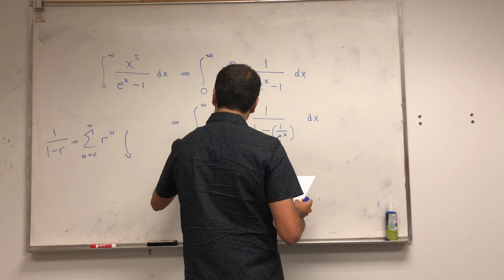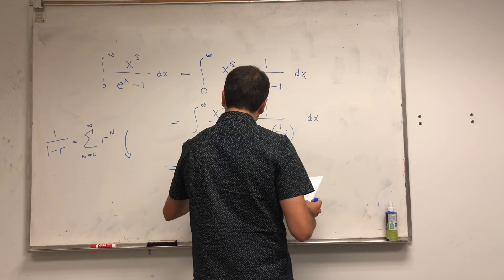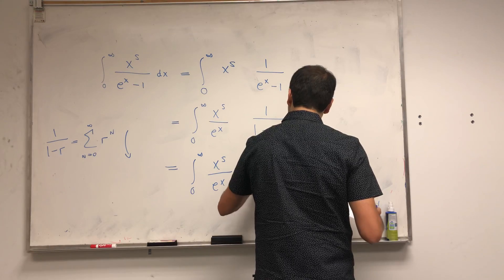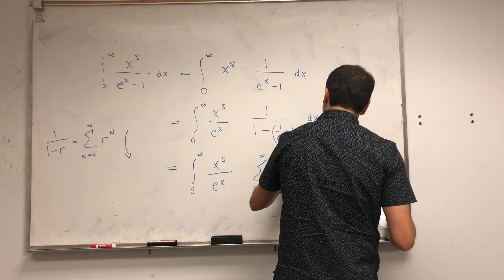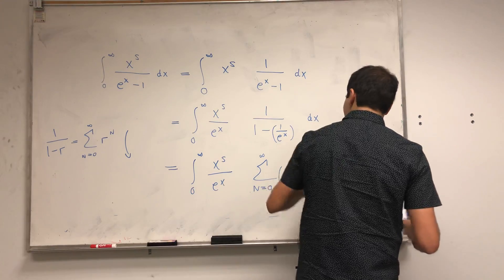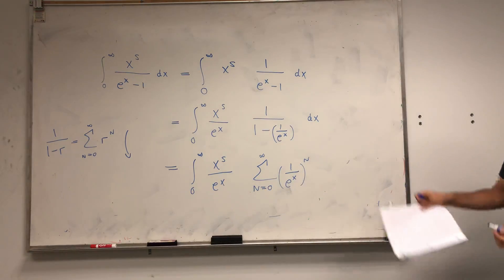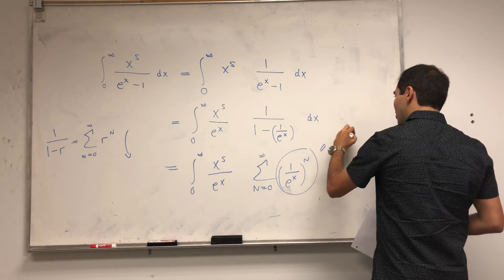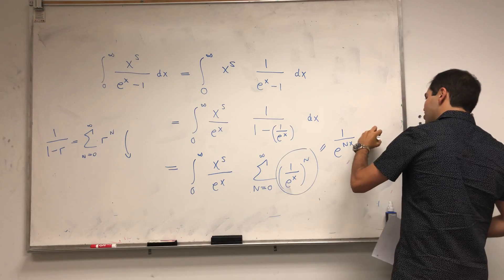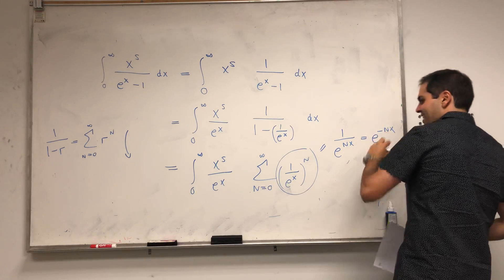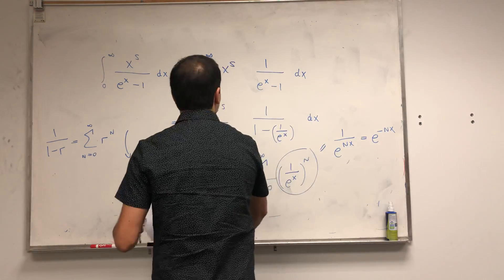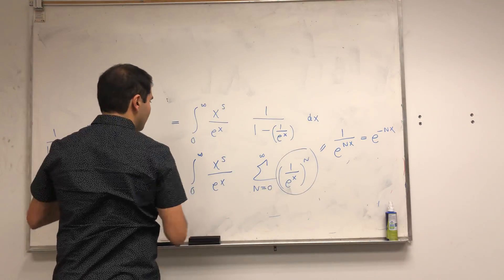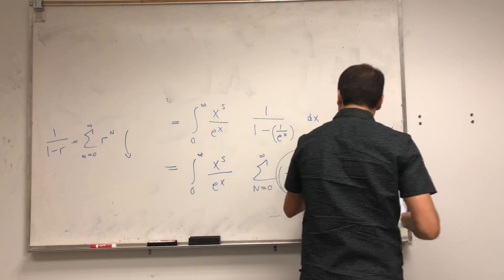So it's the same thing, but with 1 over e to the x. So it's integral from 0 to infinity, x to the s, e to the negative x, sum from n from 0 to infinity of 1 over e to the x to the n. And in a second, I'll write this in a nicer form. So this is the same thing as 1 over e to the nx, which just becomes e to the minus nx. I keep forgetting my dx's.